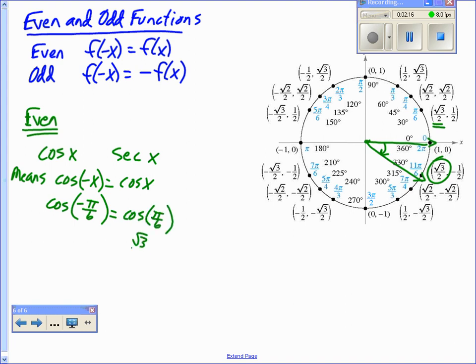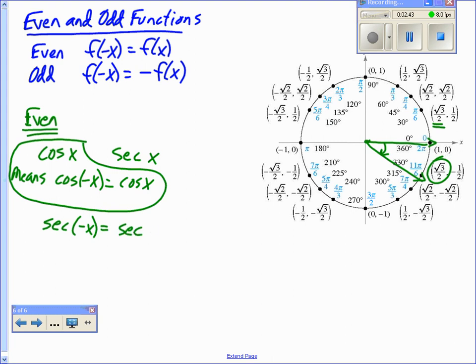Both of them are root 3 over 2. So the cosine function is even, so is its reciprocal. So the secant of negative x equals the secant of x. Not the most organized today, but oh well. We'll make it work.